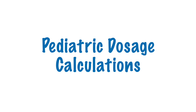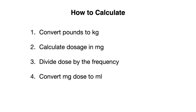Hello everyone and welcome to QuickMed, where medicine is explained quickly and easily. In this video we will discuss how to calculate antibiotic dosages for pediatric patients. Pediatric dosing can be a little more involved than calculating an antibiotic dosage for an adult because you have to do weight-based dosing. Let's talk about the four main steps you'll need to calculate an appropriate antibiotic dosage.